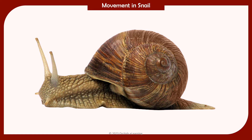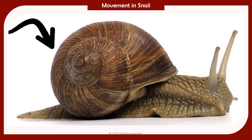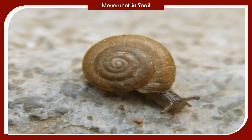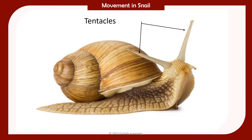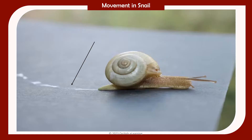Movement in snail: Like an earthworm, a snail too has a liquid skeleton. Snails have a shell inside which they can hide to protect themselves from the heat of the sun and enemies. The shell is the outer skeleton but it is not made of bones. Snails also have a pair of tentacles that bear eyes at the tips. Snails move by using a muscular organ called the foot. The foot produces a slimy substance called mucus on which the snail crawls.